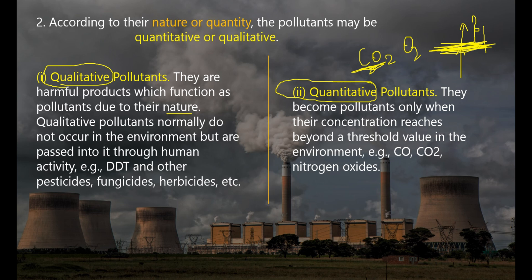CO2 is not a pollutant at normal levels — plants absorb CO2 and release oxygen. Carbon monoxide, nitrogen oxides — these are all normal components of air as a mixture of gases. But when they increase beyond a threshold level, they become harmful. That is what makes them quantitative pollutants.